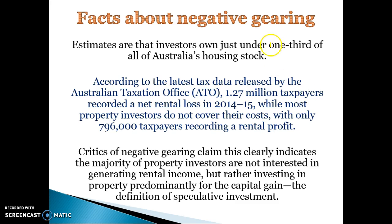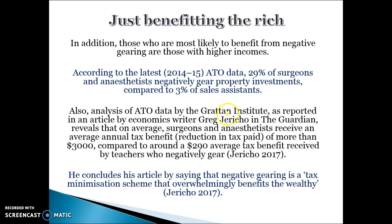Estimates claim that investors own just one third of all of Australia's housing stock. Essentially it's costing the government a lot of money because they don't collect as much in income tax. Critics claim that the majority of property investors are not interested in generating rental income but rather investing for capital gains — it's a form of speculative investment. Most people investing are also the wealthier people in society: surgeons and anesthetists were among the main people negatively gearing, as opposed to sales assistants and teachers. It has essentially become a way for the rich to decrease their tax liability and profit from rising house prices.